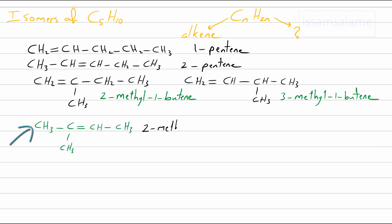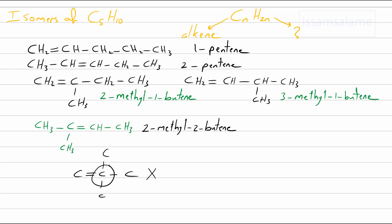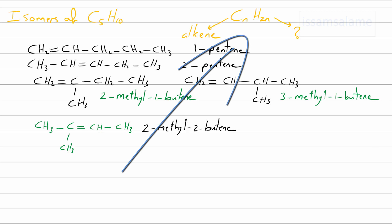We end up with the structure 2-methyl-2-butene. Now, can we draw a three-carbon-atom alkene with two branches? Since we cannot add branches at the end carbons and we have to add them at the center carbon, we cannot do it — the center carbon would be joined to five carbon atoms, which is not possible. So let me erase it.